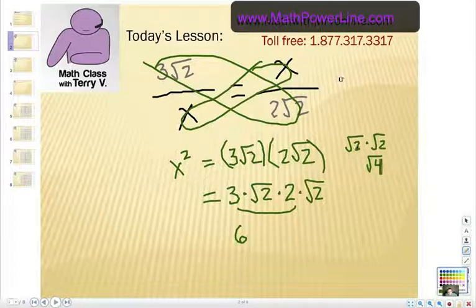So, effectively, what happens is if you multiply two radicals together that are like radicals, in this case, radical 2 times radical 2, the answer gets rid of the radical sign. So, radical 2 times radical 2 is just 2.